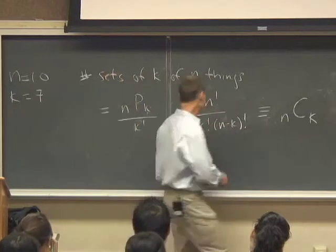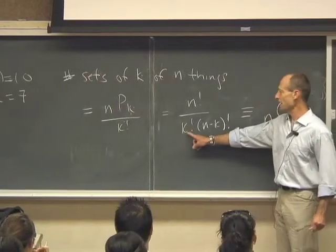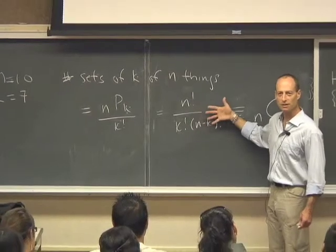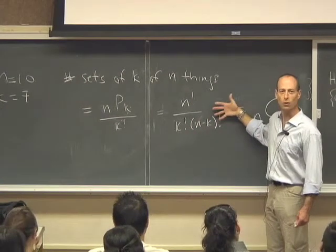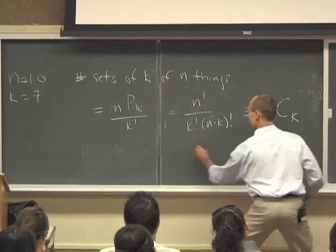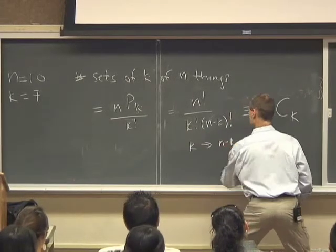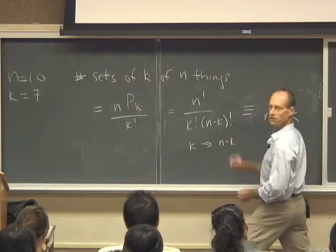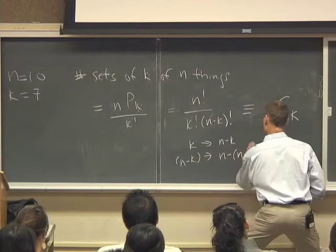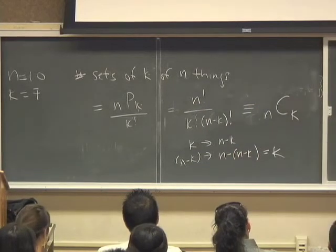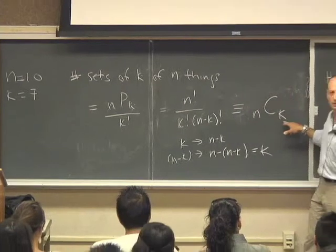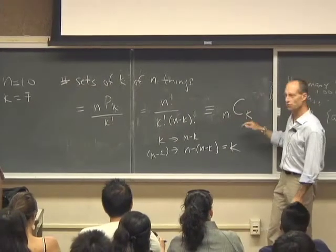In general, if I take k and change k to n minus k, n minus k goes to n minus n minus k, which is k. So n choose k is identically equal to n choose n minus k.